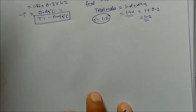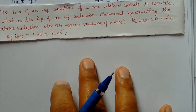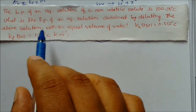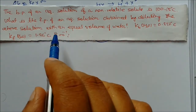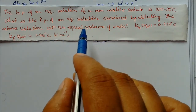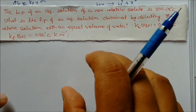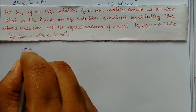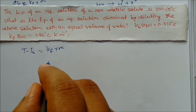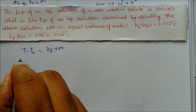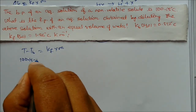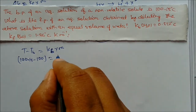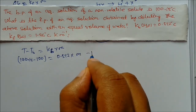This is not a difficult problem but we have to take a little care. Next: the boiling point of an aqueous solution of a non-volatile solute is 100.15 degree centigrade. What is the freezing point of the aqueous solution obtained by diluting the above solution with an equal volume of water? Kb and Kf of water are given. First, find molality using delta Tb = Kb × m: 100.15 minus 100 = 0.512 × m.